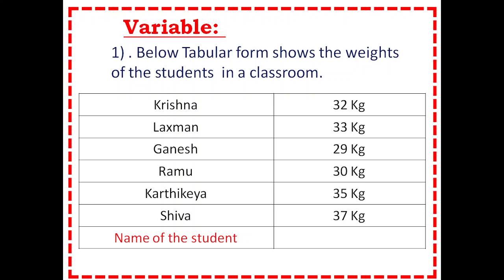In this table, the first column shows the name of the student. It may be any student — there is no particular student. So, as we don't know the name of the student, we can't tell the weight of the student. We represent the weight of the unknown person or student by unknown quantity — that is, the letter X. This letter X is called the variable, so it may be any number.